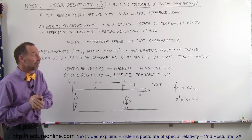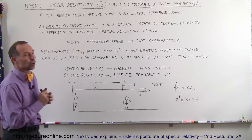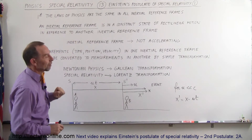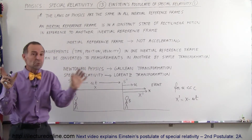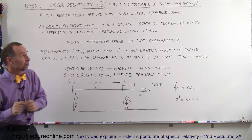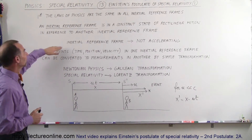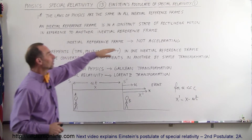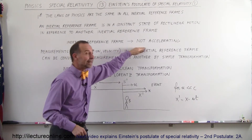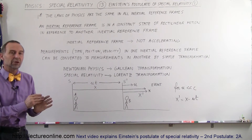So what is an inertial reference frame? An inertial reference frame is in a constant state of rectilinear motion — meaning it's not accelerating with reference to another inertial reference frame. We can have two reference frames where one is moving relative to the other, but it must be moving at a constant speed. If the reference frame is not accelerating, it's considered an inertial reference frame. If it is accelerating, then it's not an inertial reference frame, and we cannot make the transformations from one reference frame to another.